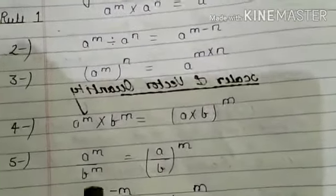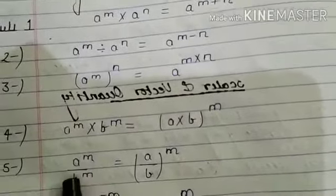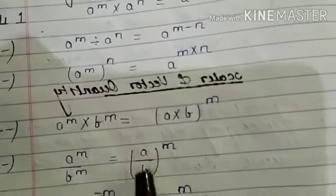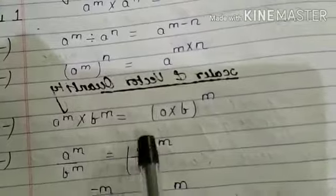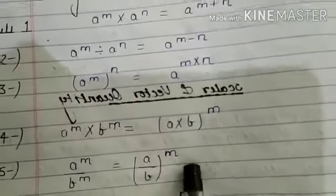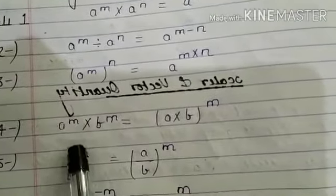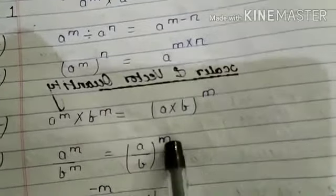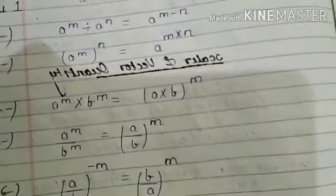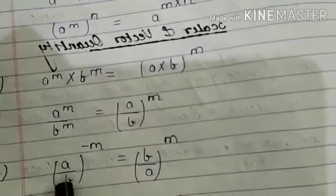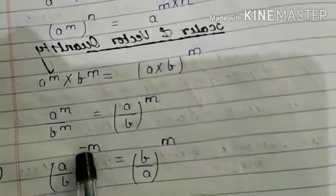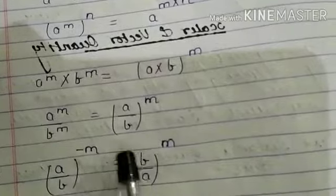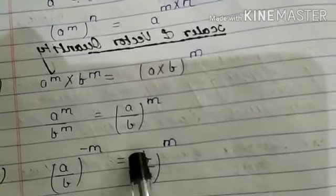Rule 5: a to the power m divided by b to the power m can be written as a by b, whole to the power m. And if we have a by b to the power minus m, we can write this as b by a to the power m.